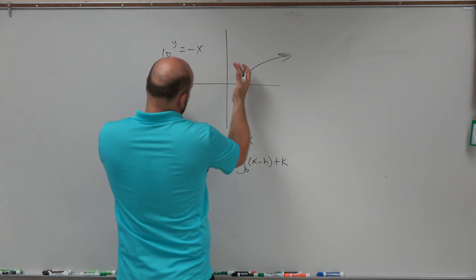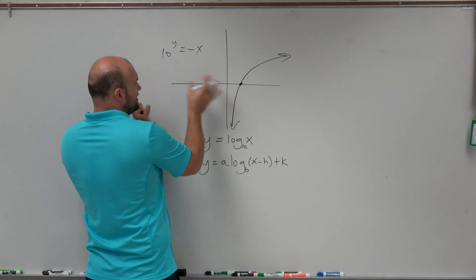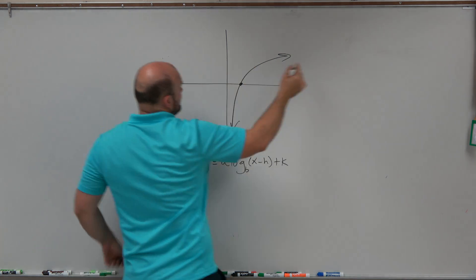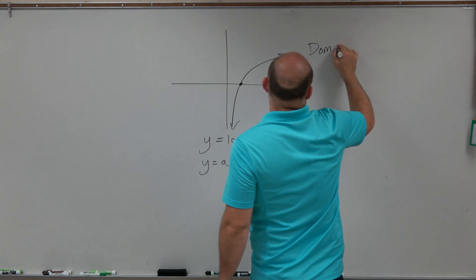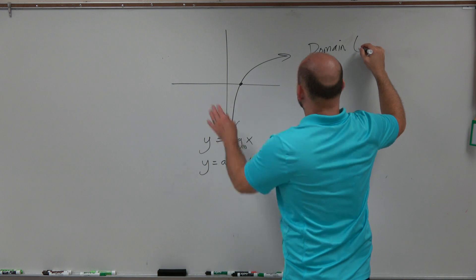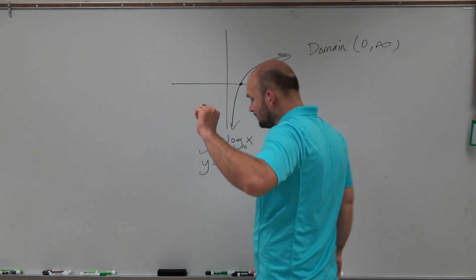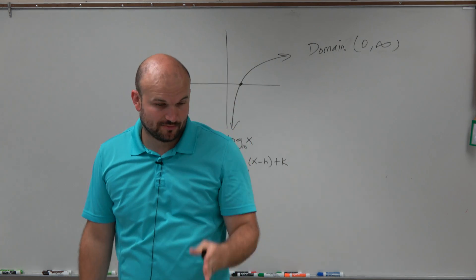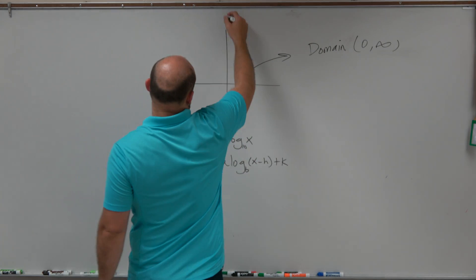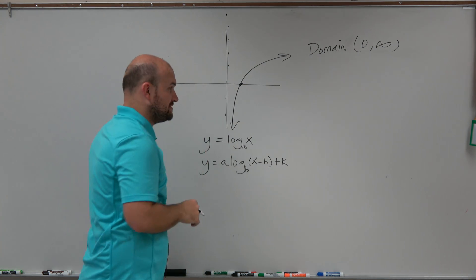So the domain of our parent graph is going to be from 0 to infinity. There's actually a vertical asymptote that the graph is approaching.